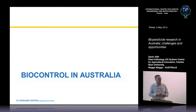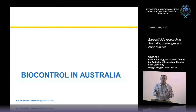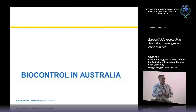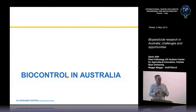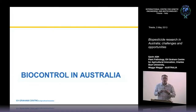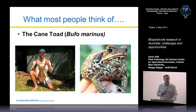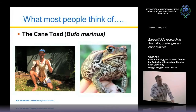I'd like to talk about biological control in Australia. I'll cover the initial approaches, which were very much about isolating a biological control agent from another country and releasing it into Australia. This has been very successful in a number of situations, but not so successful in others. What people often think about when they think of biological control in Australia are the disasters.